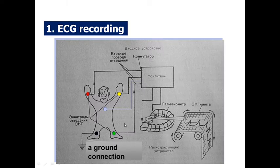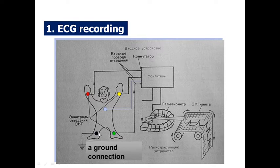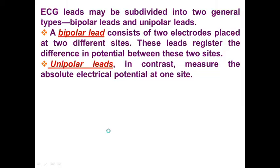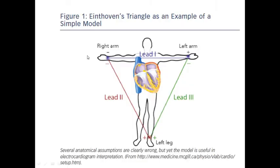Before getting this kind of picture, we have to connect electrodes of the ECG machine with the patient's body. There are several colored electrodes — for example, the red electrode we connect with the right arm of the patient, yellow with the left arm, green with the left foot, and the grounding electrode, which is black, with the right foot of the patient.